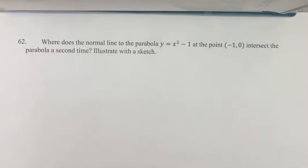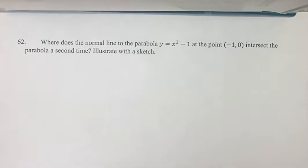Hello and welcome back to another video. In this problem we're asked where does the normal line to the parabola y equals x squared minus 1 at the point negative 1, 0 intersect the parabola a second time.